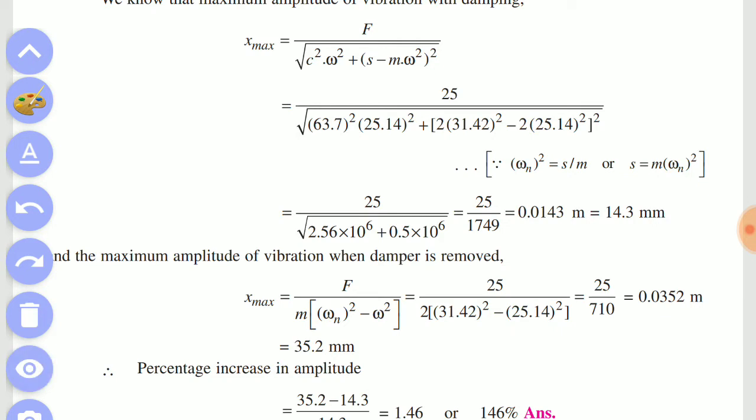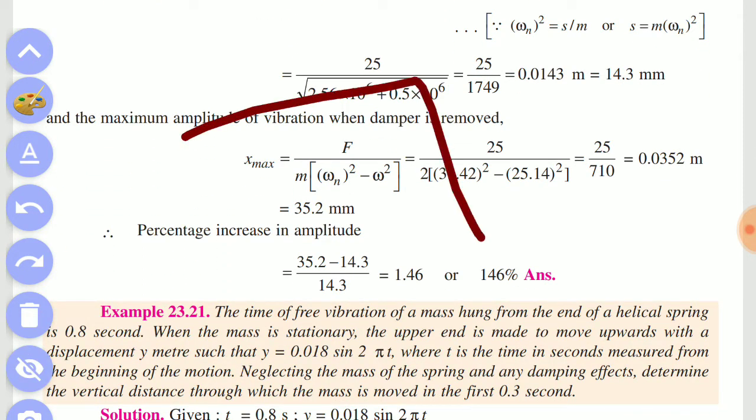Now if you remove the damper, that formula is x_max equals F divided by m times omega_n squared minus omega squared. We know all values. You can see that.